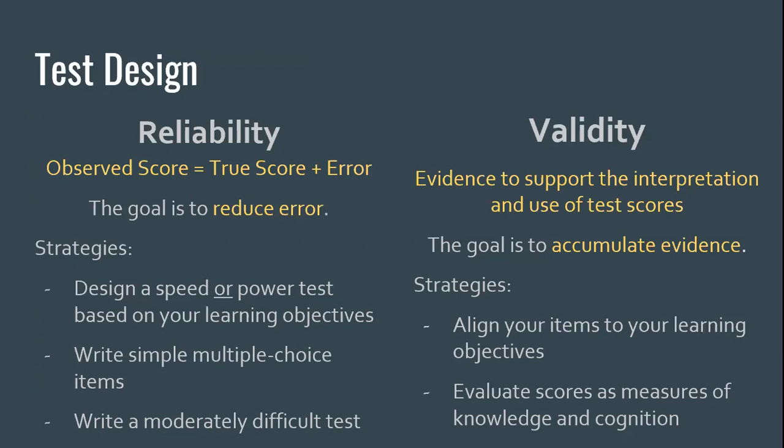A moderately difficult test may be counterintuitive depending on your philosophy of assessment, but we want a test that discriminates between students on the lower end, the mid-range, and the high end. If a test is too difficult, students may face fatigue or lack of motivation as they move through items, reducing their ability to fully process them. We'd also only be discriminating between top performers — say between someone who'd get 95% and someone who'd get 97% — while leaving the bulk of the class behind.